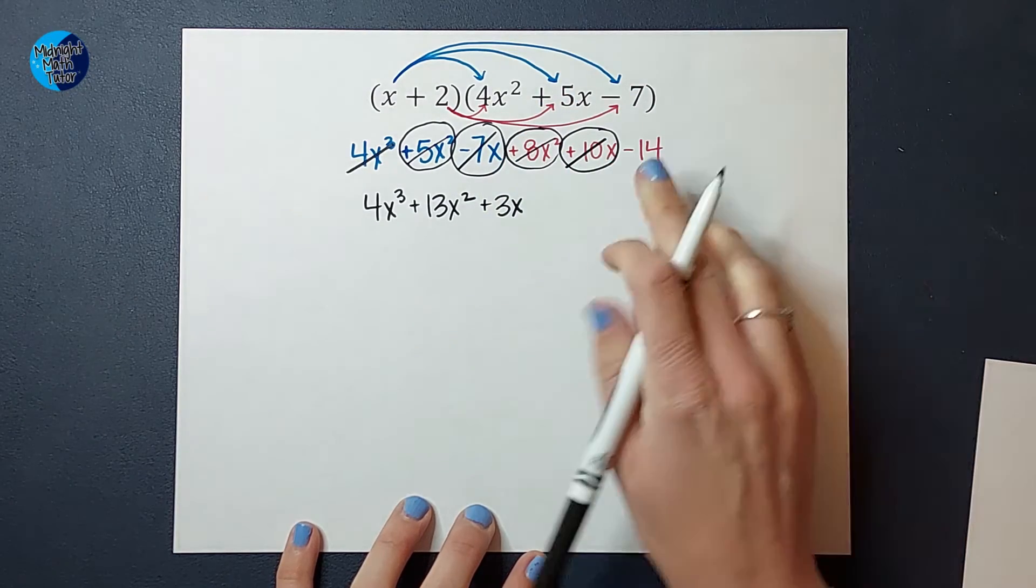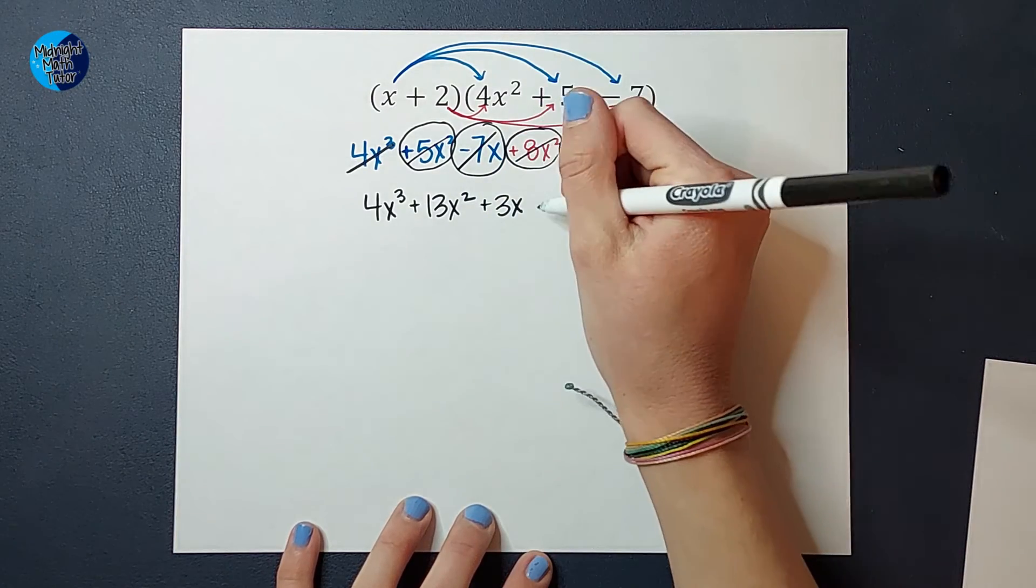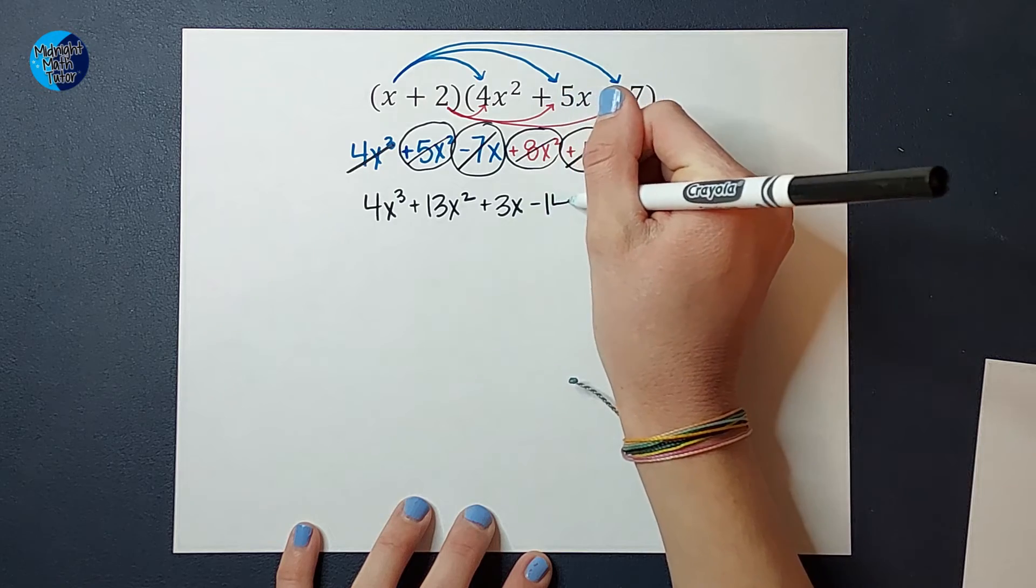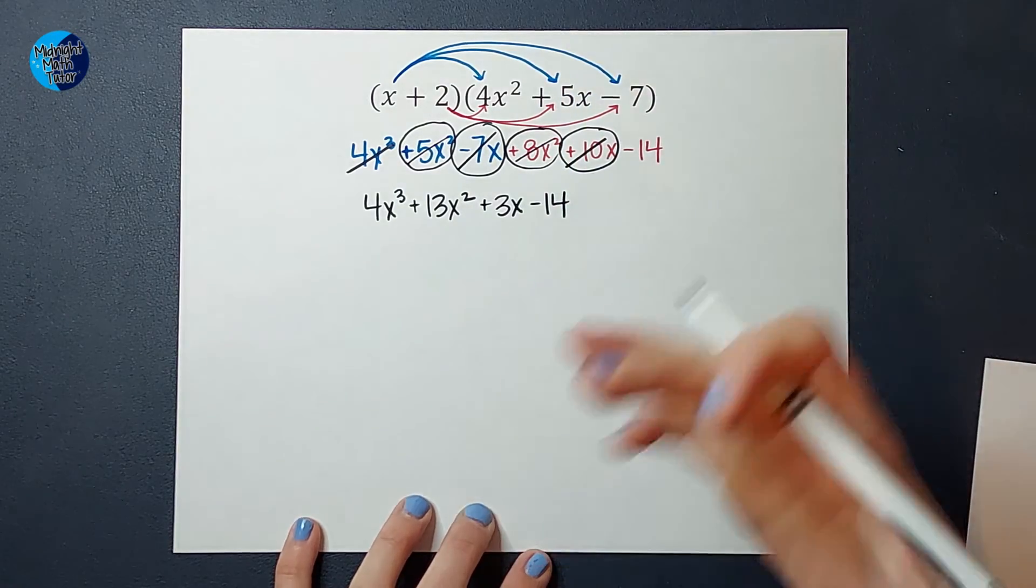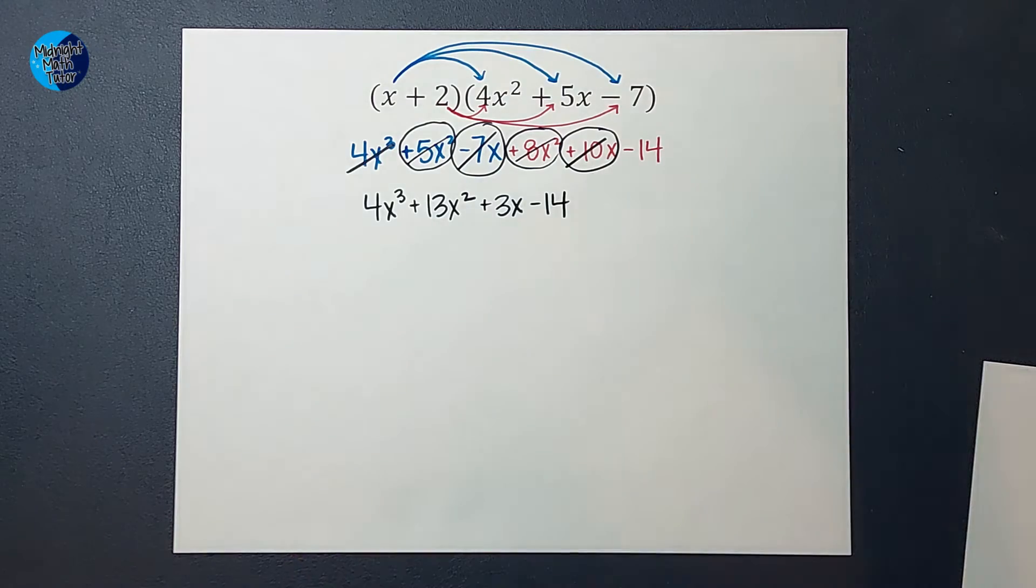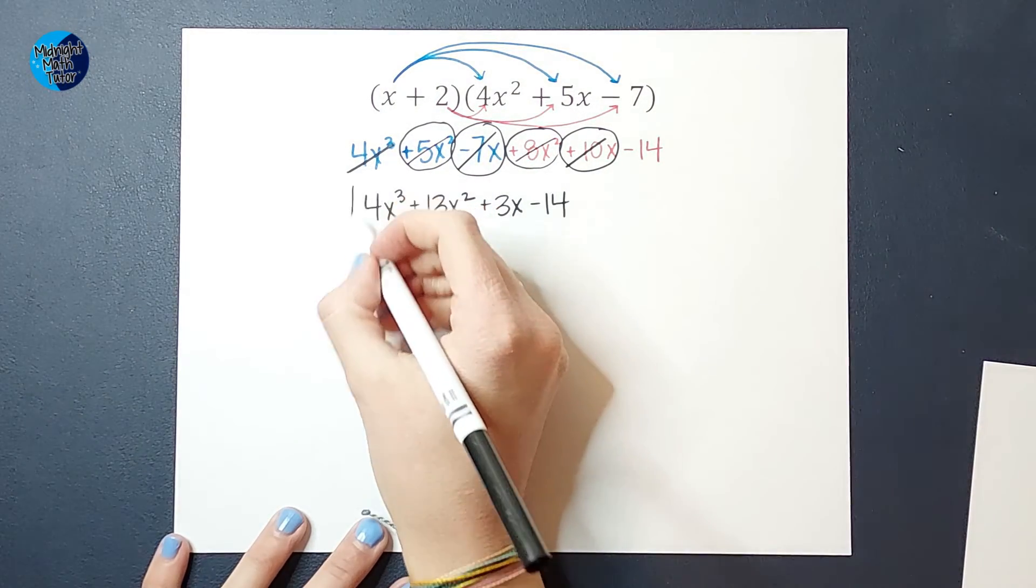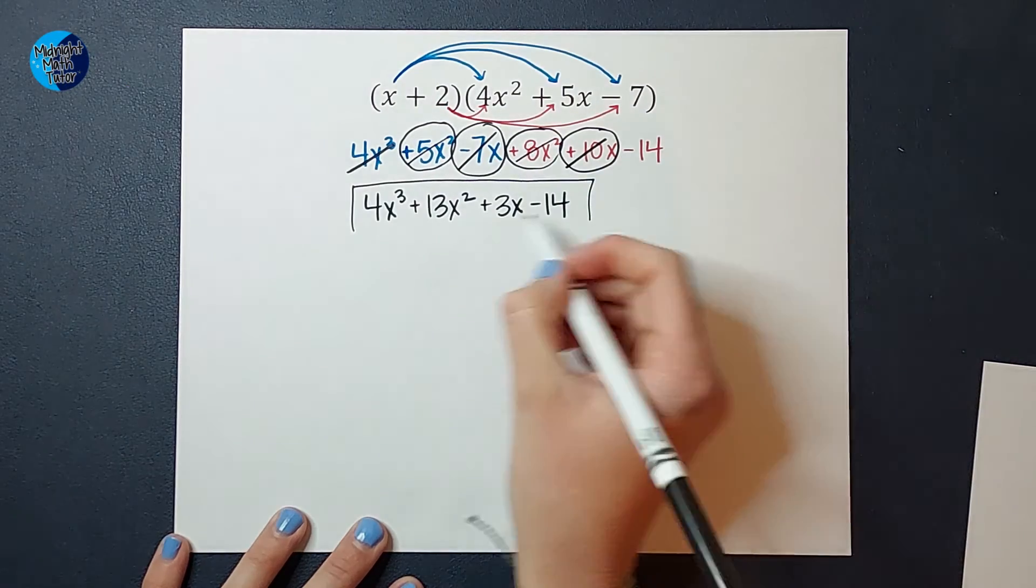And last but not least, I have the minus 14 on the back. If there was something else that didn't have a variable, it would be like terms with that. But in this case, that's the only one. And that is how you multiply those.